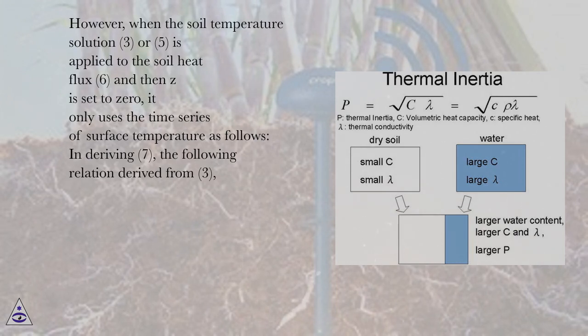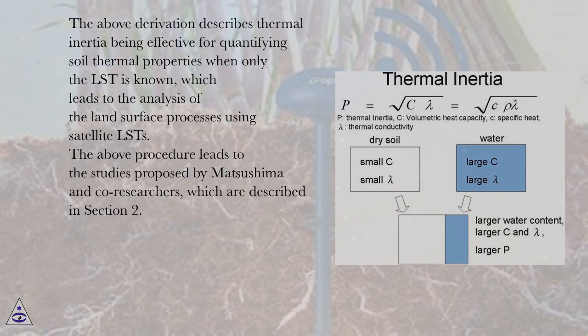In deriving Equation 7, the following relation derived from Equation 3 is used. The above derivation describes thermal inertia being effective for quantifying soil thermal properties when only the LST is known, which leads to the analysis of the land surface processes using satellite LSTs.